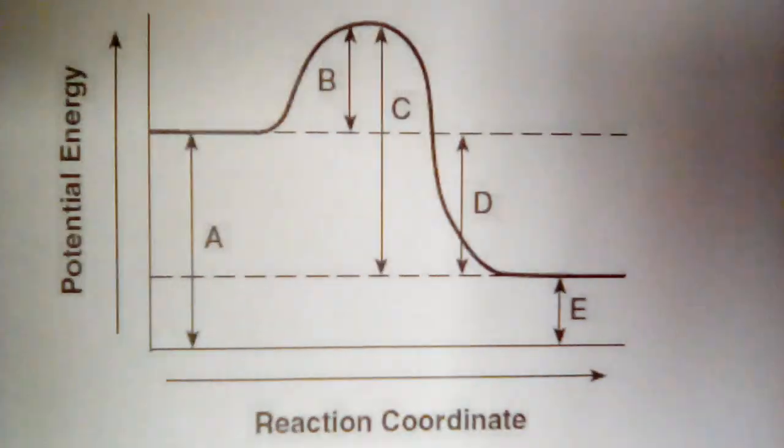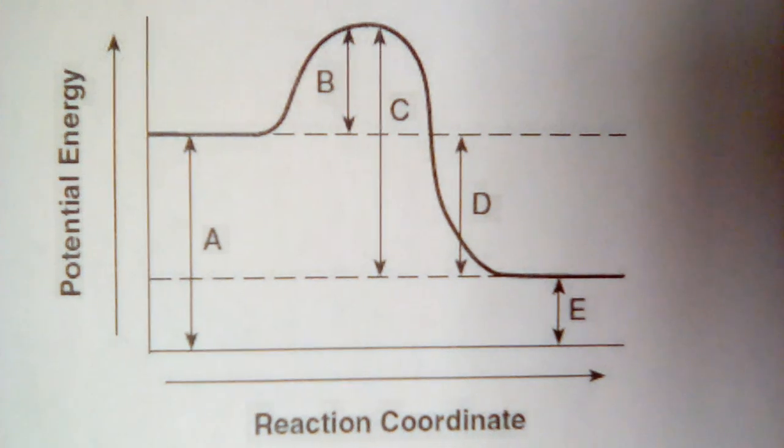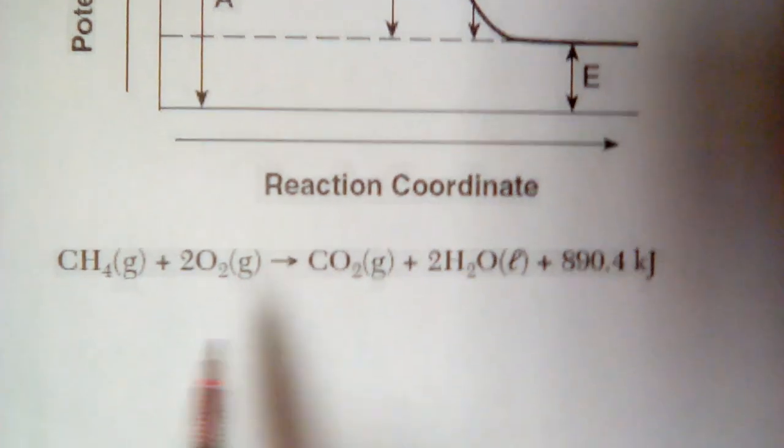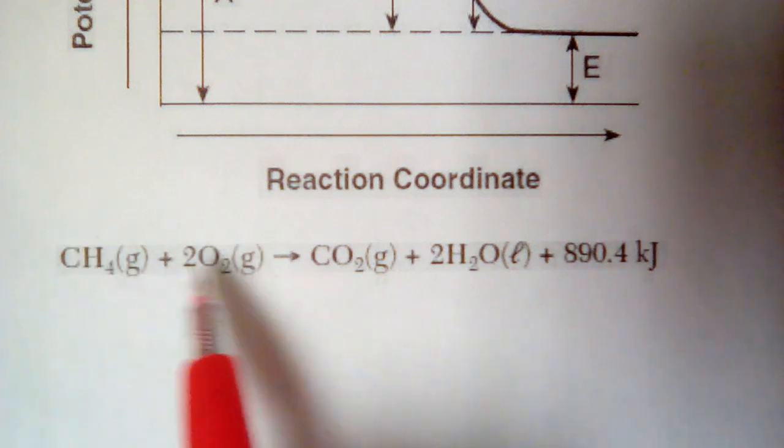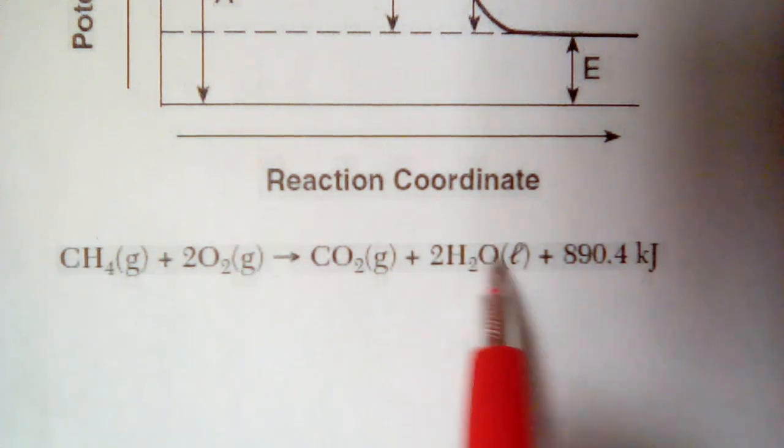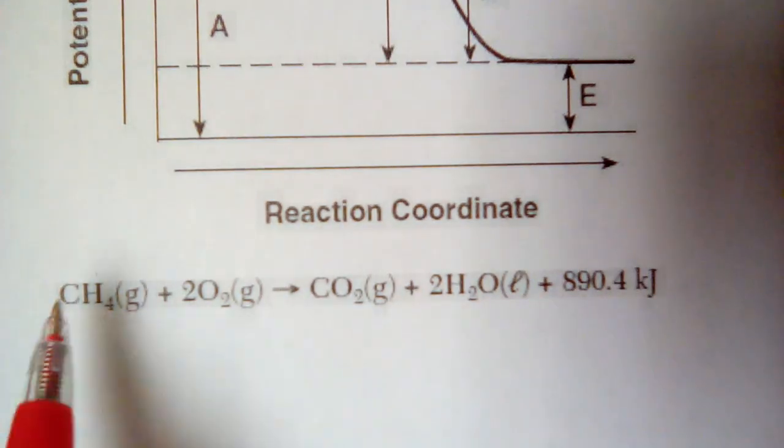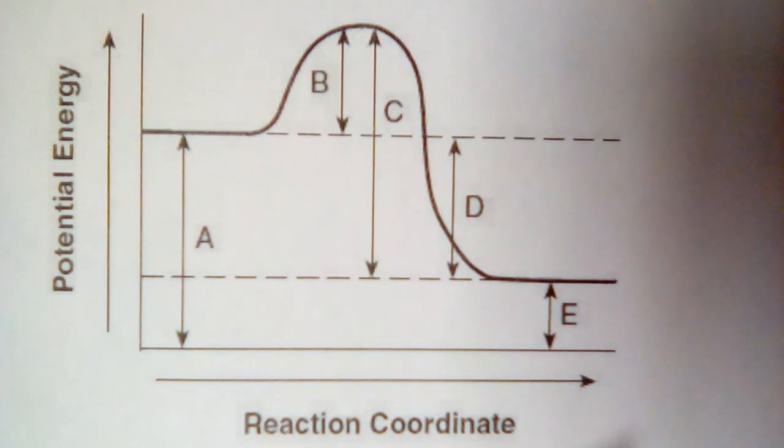All right, this video is all about everything you need to know about potential energy diagrams. So this is a potential energy diagram. This is the potential energy diagram for the combustion of methane. It's a hydrocarbon reactant with oxygen producing carbon dioxide and water. That is the general format of a combustion reaction. CH4's methane, so this is the combustion of methane.